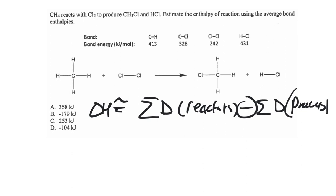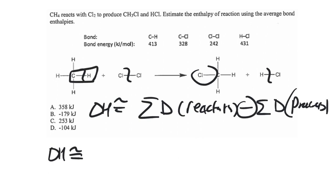All bond enthalpies are positive, meaning it takes energy to break a bond, and we get energy back when we make a new bond. So we're breaking a C-H bond and replacing it with a C-Cl bond, and we're also breaking a Cl-Cl bond and replacing that with an H-Cl bond. We could break all four C-H bonds, or we can identify that only one bond is broken and the other three remain unchanged.